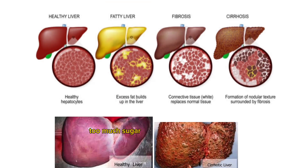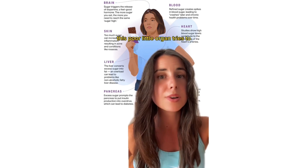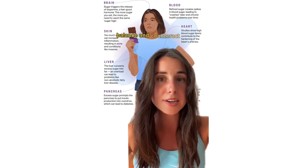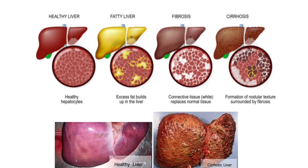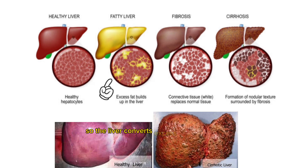Too much sugar increases inflammation. This poor little organ tries to balance and counteract the high intake of sugar, but your cells stop being able to take up the glucose from your blood, so the liver converts excess sugar into fat.